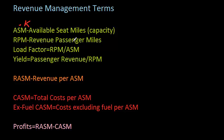That leads us to load factor. We combine ASMs and RPMs and divide RPMs by ASMs. In our simple example with one flight, we'd have 7,500 RPMs over 10,000 ASMs, giving a load factor of 75%. A more obvious way would be 75 customers divided by 100 seats, and on a per-flight basis you'd get the same answer. But airlines want to know how full their flights are on average across their entire network, and since different flights have different distances, this normalizes load factor across the network.